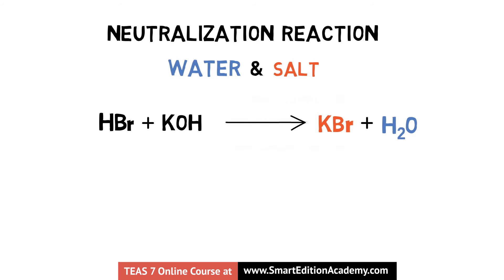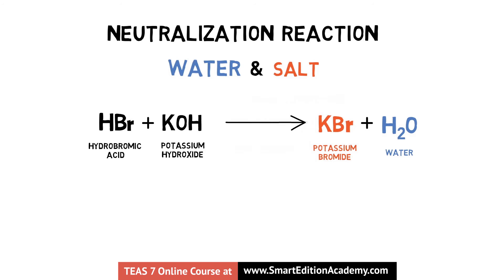Let's look at this equation. Hydrobromic acid and potassium hydroxide react to form a salt, potassium bromide, and water. If we notice, this is actually a double replacement reaction, in which our acid and base compounds neutralize to form two different compounds as the products, leaving no room for protons or ions to float about.